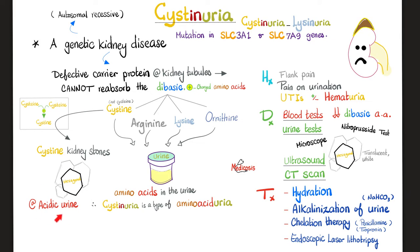That's why one of the ways to help these patients is to alkalinize their urine, to decrease the risk of precipitation of these cystin kidney stones. Since these are amino acids being lost in the urine, this is called aminoaciduria. The patient might complain of flank pain from the stones, pain on urination, urinary tract infections, and possibly hematuria — all because of the stones.